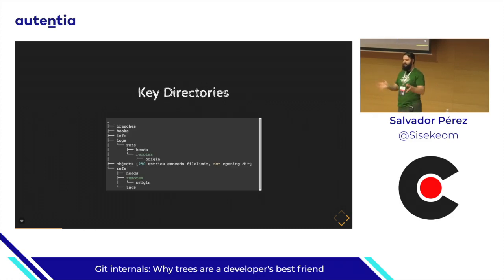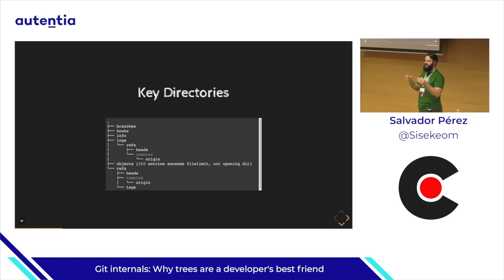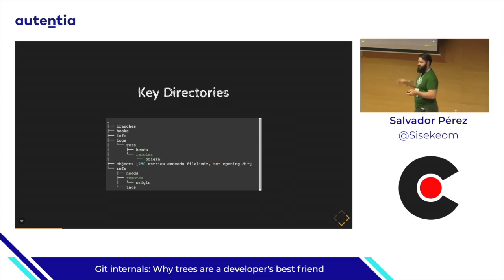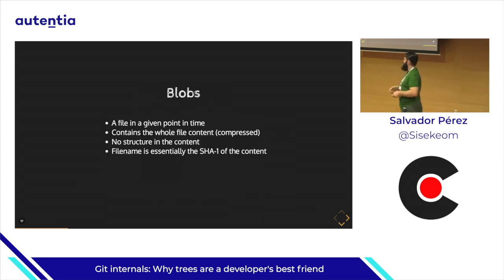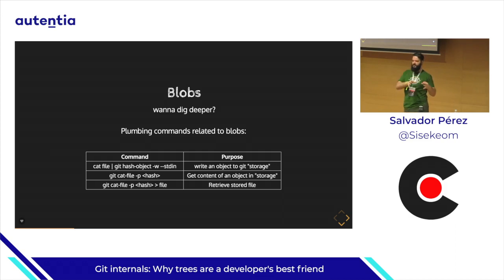For blobs: a blob is a representation of one file at one given point in time. It contains the whole content of the file, compressed, so it will be really small because it's usually text. The name of the file is the SHA-1 of the content — it contains something about salting and other details, but basically it's the hash of the content. Notice that blobs don't contain any information about the name of the file. It's only the content — just a dumping ground for the object content. I've left a couple of plumbing commands here in case you want to play with it: the ones used to get one file and generate the blob object, and the ones to retrieve one.